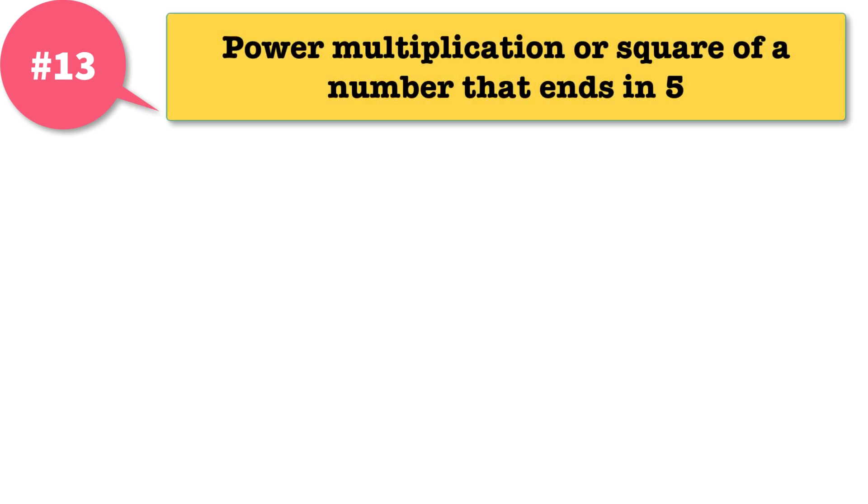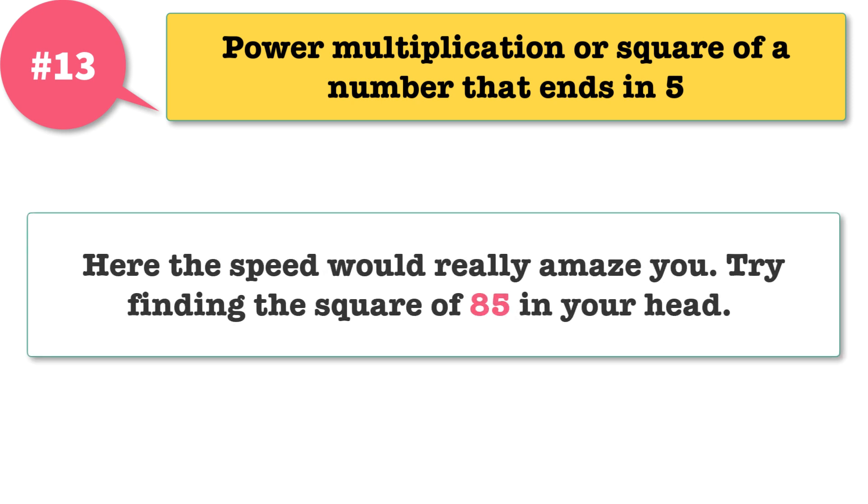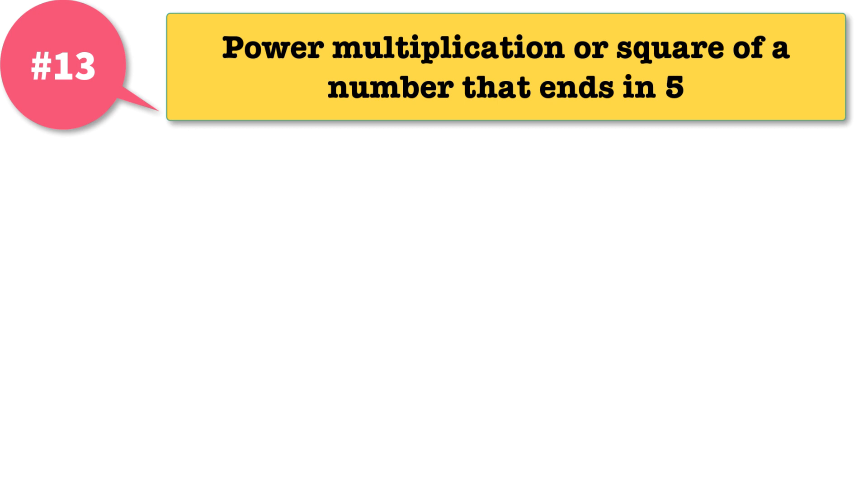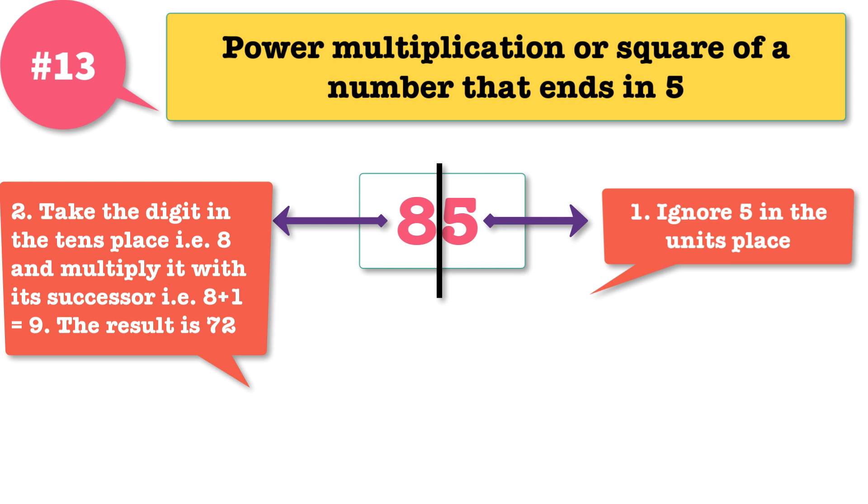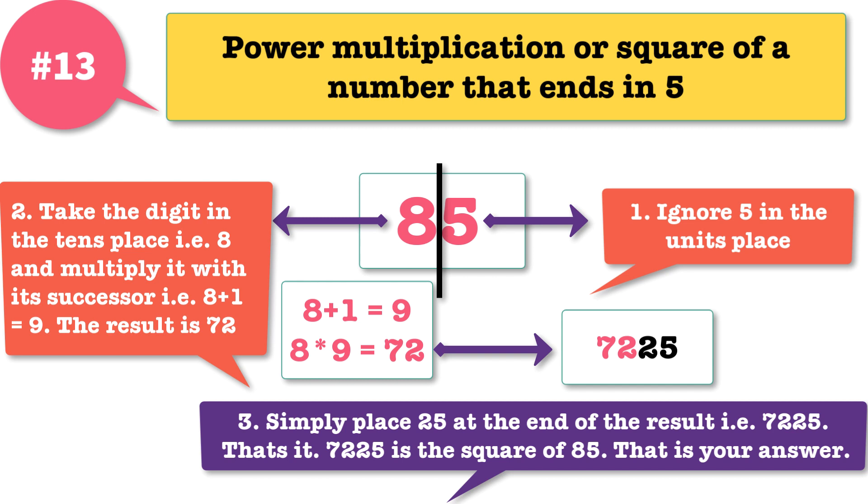13: power multiplication, or square of a number that ends in 5. Here the speed would really amaze you. Try finding the square of 85 in your head. How much time did it take you? Pretty more time. Now try this fast math trick here. Step 1: ignore 5 in the unit's place. Step 2: take the digit in the tens place, that is 8, and multiply it with its successor, that is 8 plus 1 which equals 9. The result is 72. Step 3: simply place 25 at the end of the result, that is 7,225. That's it. 7,225 is the square of 85. That is your answer. Wasn't that fast math trick?